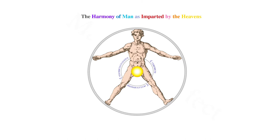Next, the planet Mercury influences our lingua, or language/tongue, the manus digiti, or fingers of the hand, the cerebrum, or intellect in this case, and memoriam, or memory.